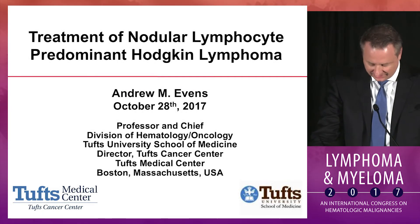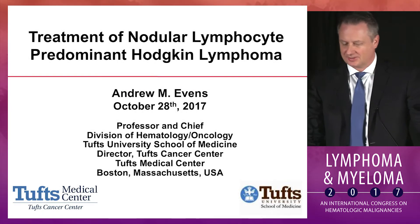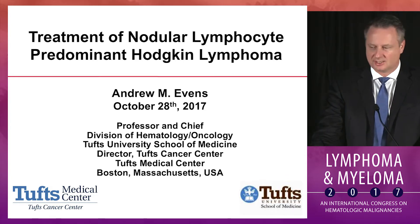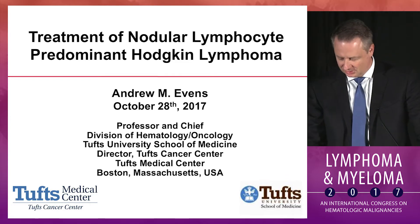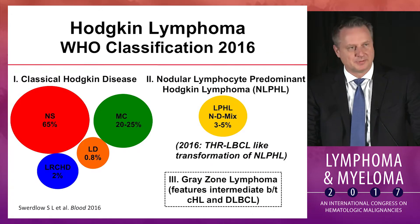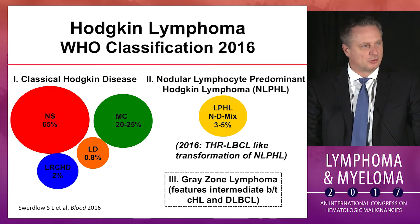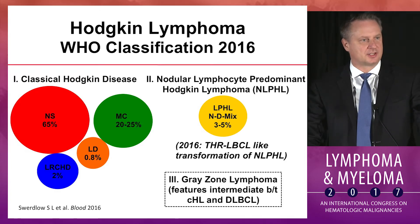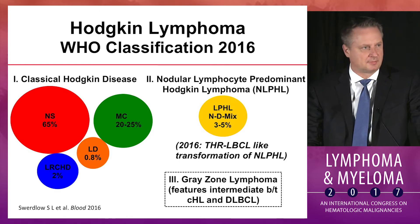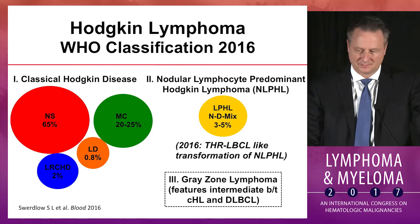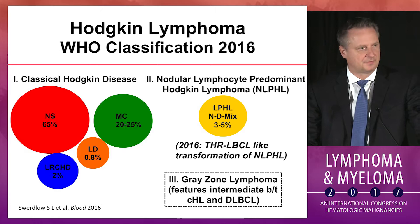Thanks for the invitation. I was asked to speak on lymphocyte predominant Hodgkin lymphoma. As you may know, Hodgkin lymphoma is more homogeneous than non-Hodgkin's lymphoma — there really are just a handful of different types, with the most common subtype being classical Hodgkin lymphoma, as seen on the schematic on the left, although there is this one pulled out as the focus of this talk: nodular lymphocyte predominant Hodgkin lymphoma.